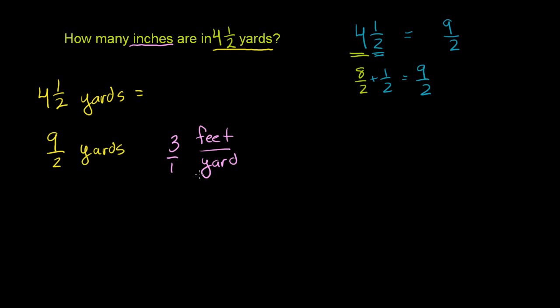And another way to think about it is, however many yards you have, you're going to have more feet. There are 3 feet per yard. So if I have 1 yard, I'm going to have 3 feet. If I'm going to have 2 yards, I'm going to have 6 feet. So you can always think about it in your head, multiplying by 3.